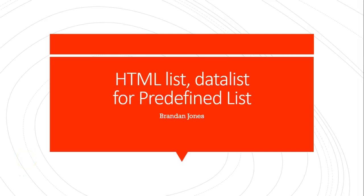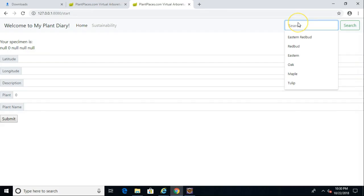In this video, we're going to see how to use a datalist element in HTML to offer a user a predefined list of possible values for an input field. We want to do this because it's good practice to minimize the amount of typing that a user has to do.